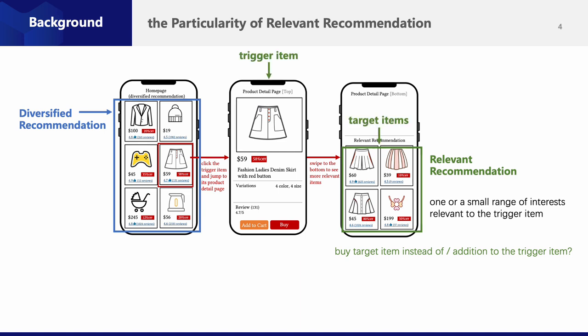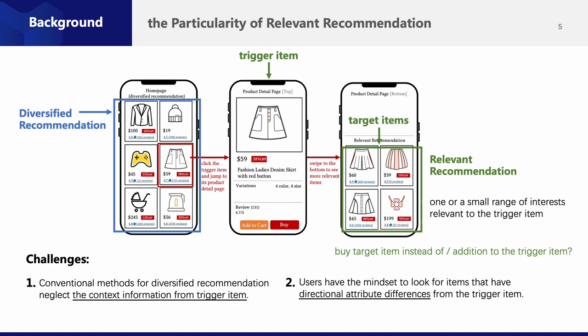We call this previous clicked item the trigger item, and the candidate items in relevant recommendation the target items. Due to the particularity of relevant recommendation, we face two challenges. Firstly, conventional methods for diversified recommendation neglect the context information from the trigger item. And secondly, users have the mindset to look for items that have directional attribute differences from the trigger item.